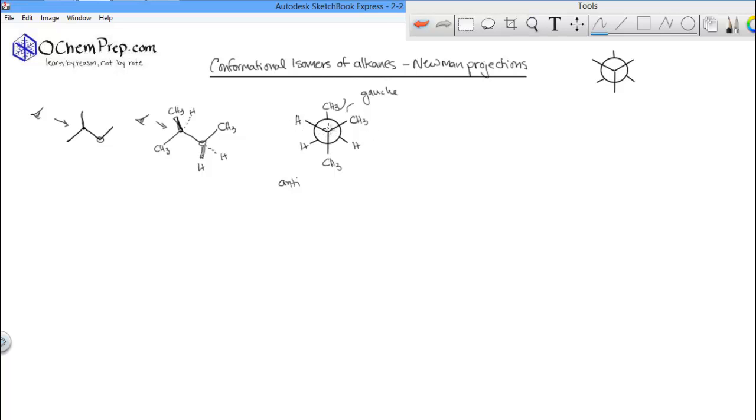We're going to rotate the front carbon. Usually when you draw Newman projections, especially the staggered conformational isomers, you're going to keep one carbon still, and the other carbon you're going to rotate. I'm going to keep the front carbon still and then rotate the back carbon to see how the energy changes as this methyl group rotates from this position to this position.